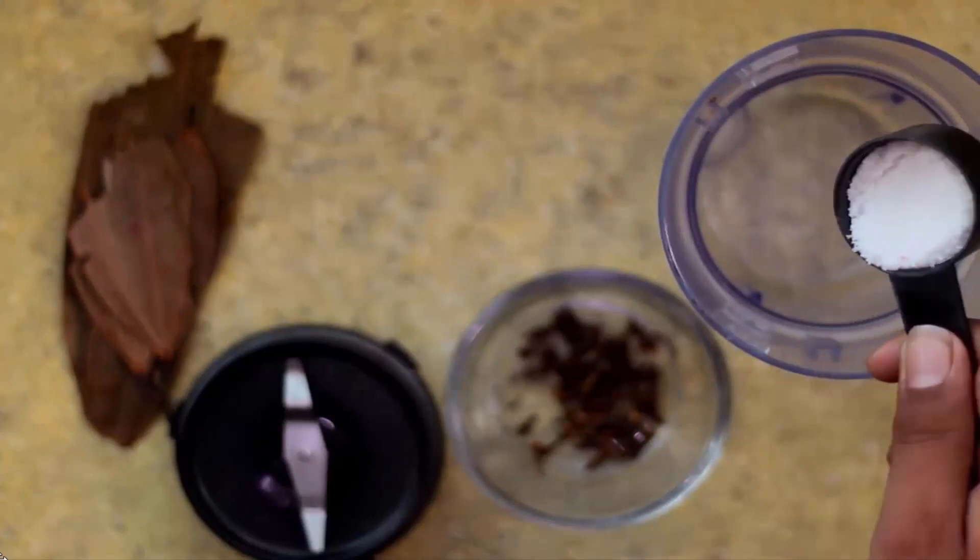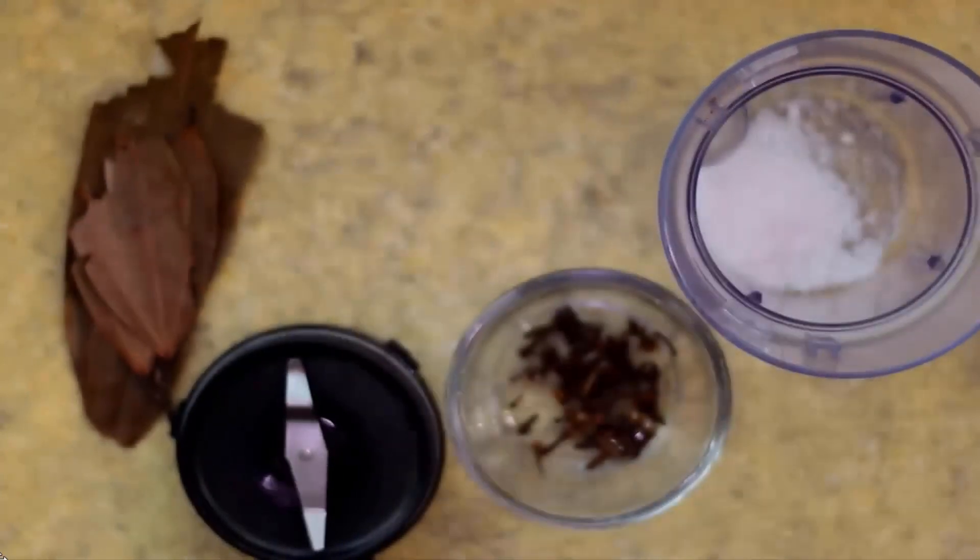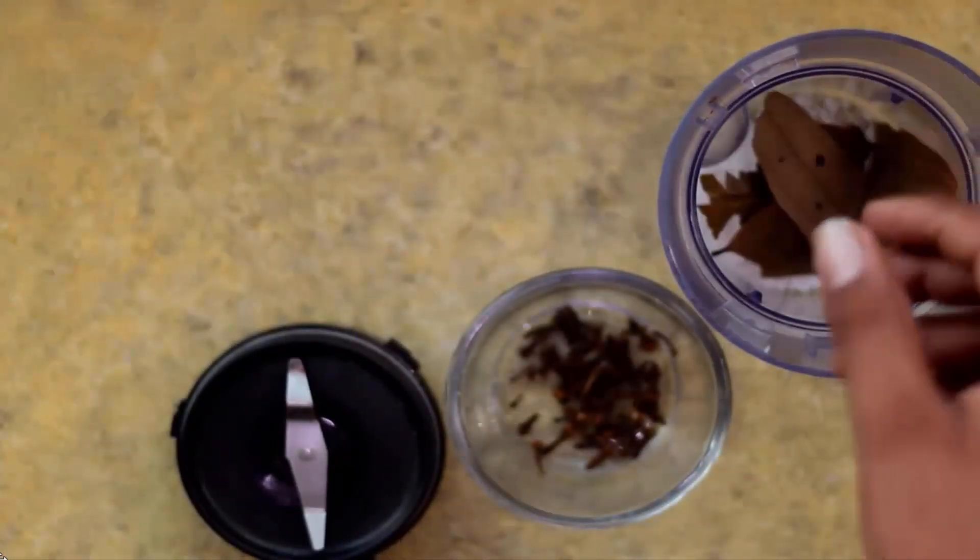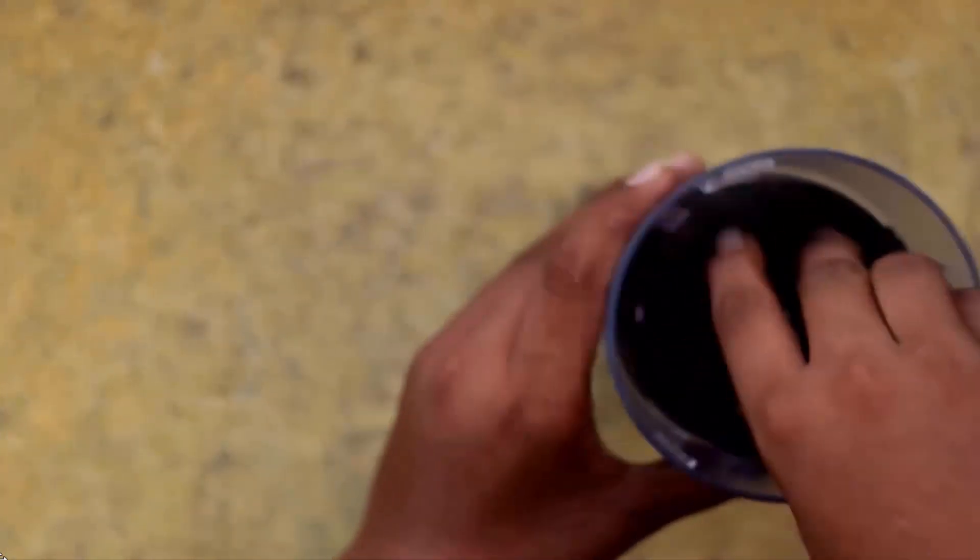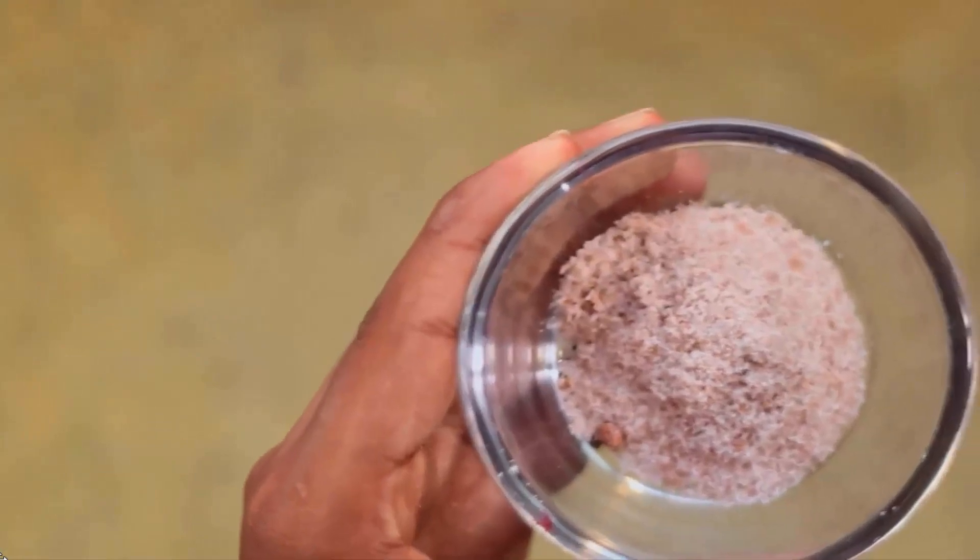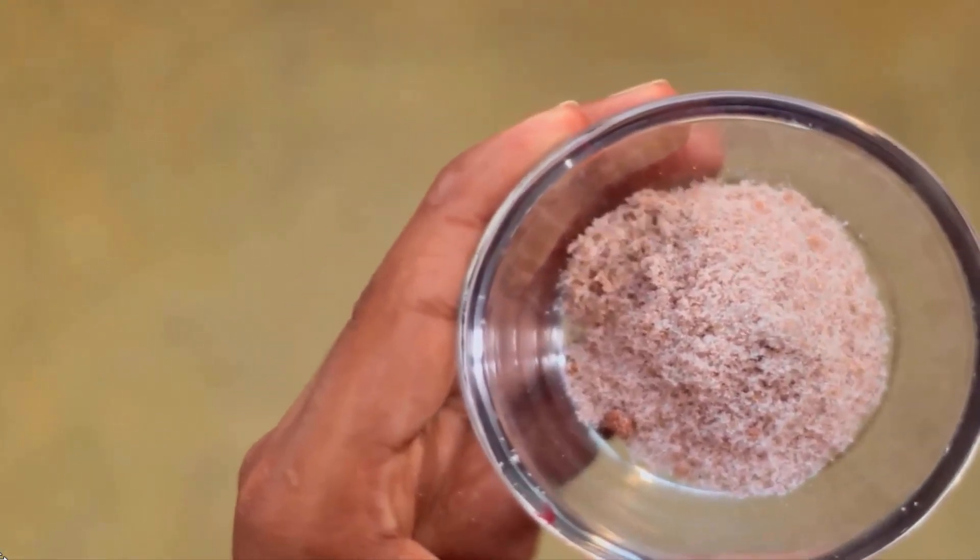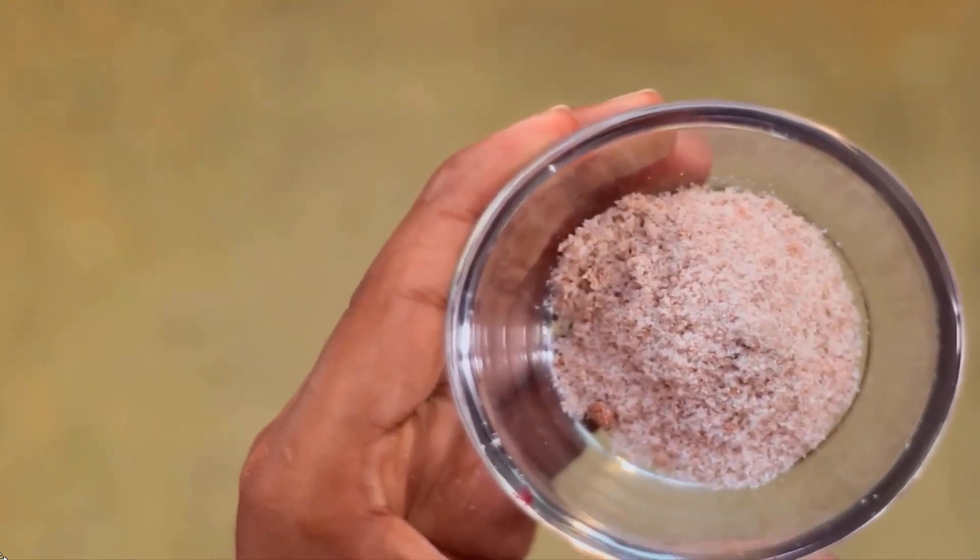Add two to three tablespoons of powdered neem balls in a grinder. Add two bay leaves and three to four cloves in it. Grind all these ingredients to make a smooth powder. Add this powder in a bowl and sprinkle it in any affected area of your home.